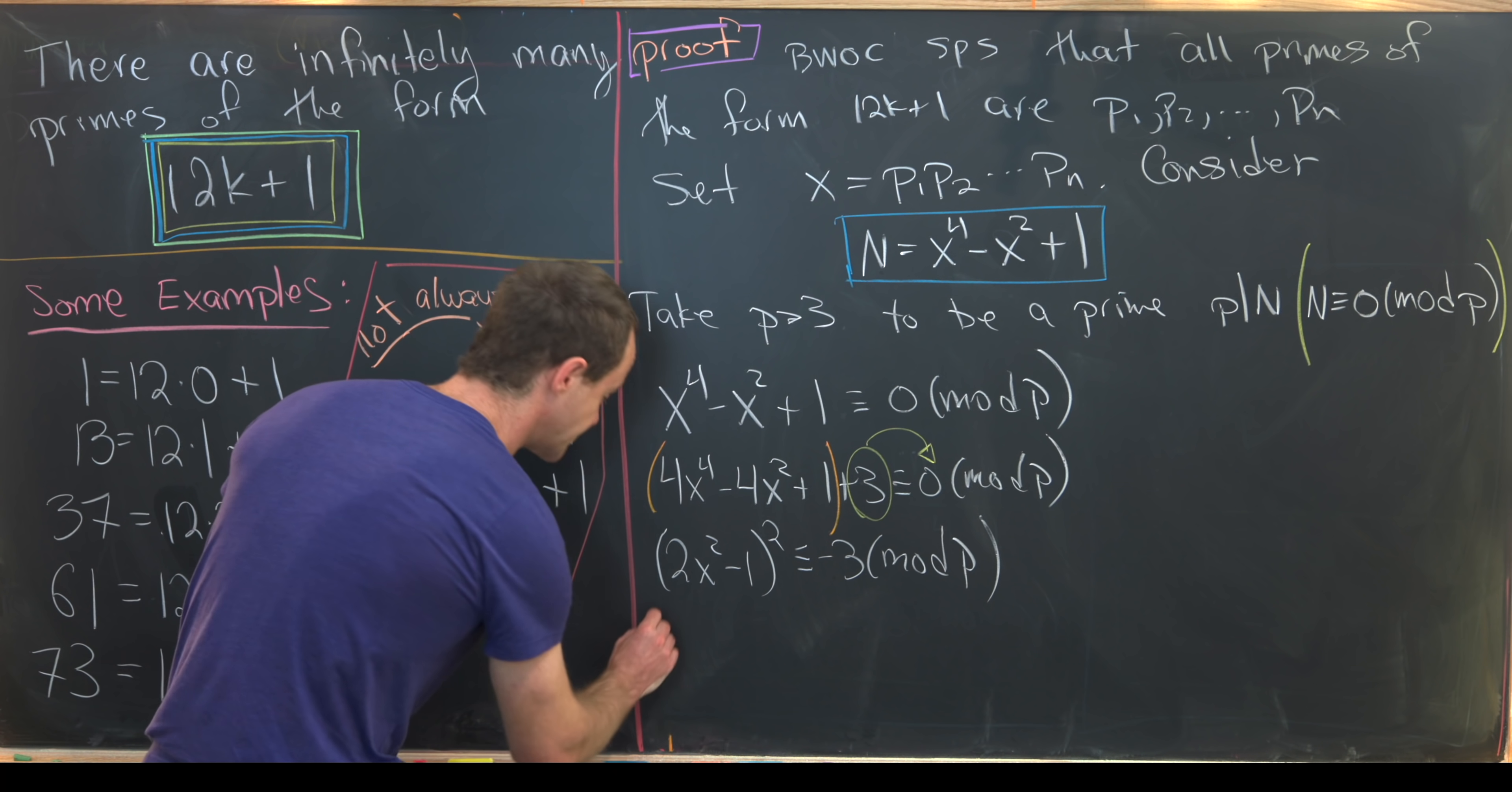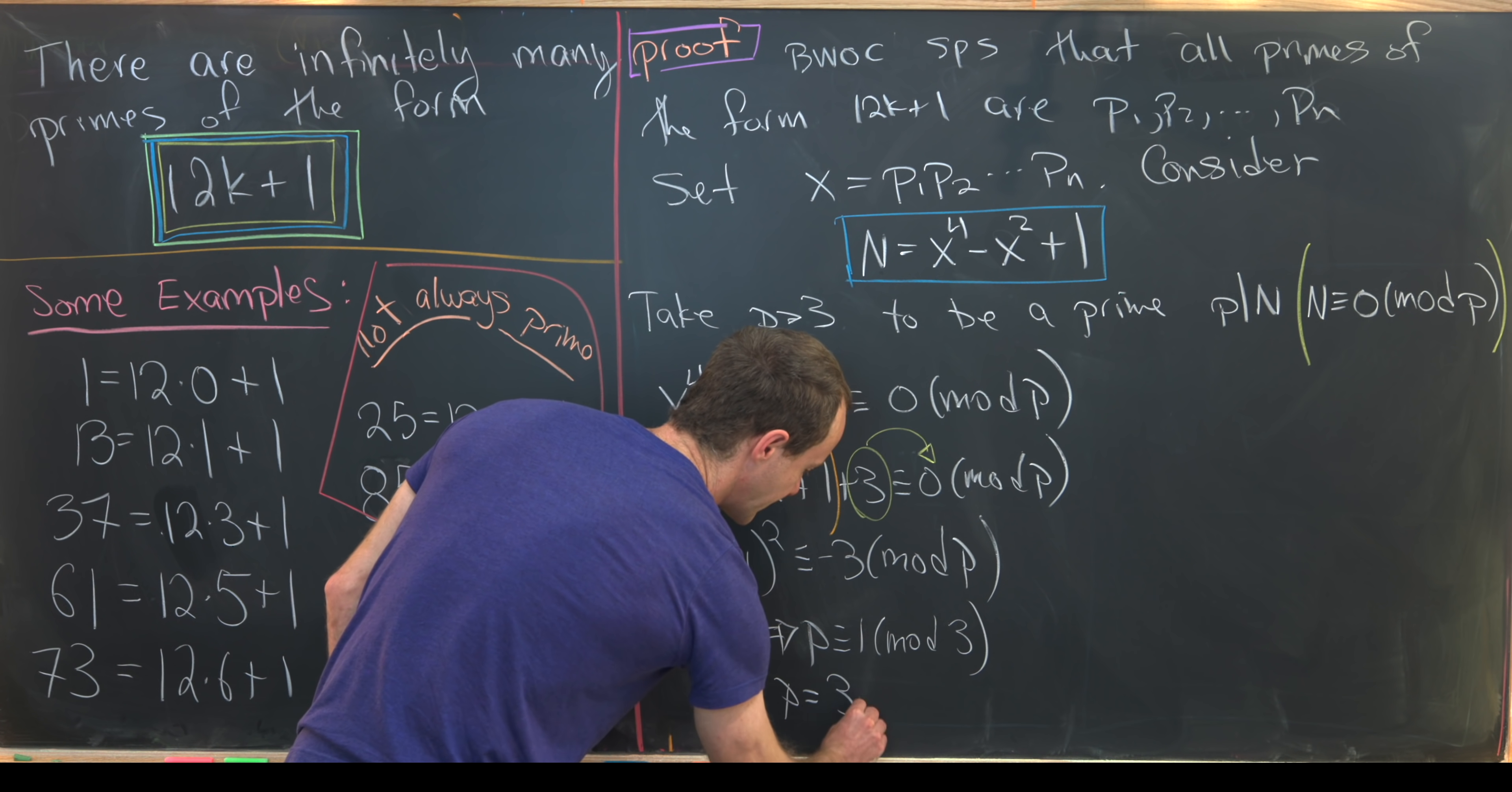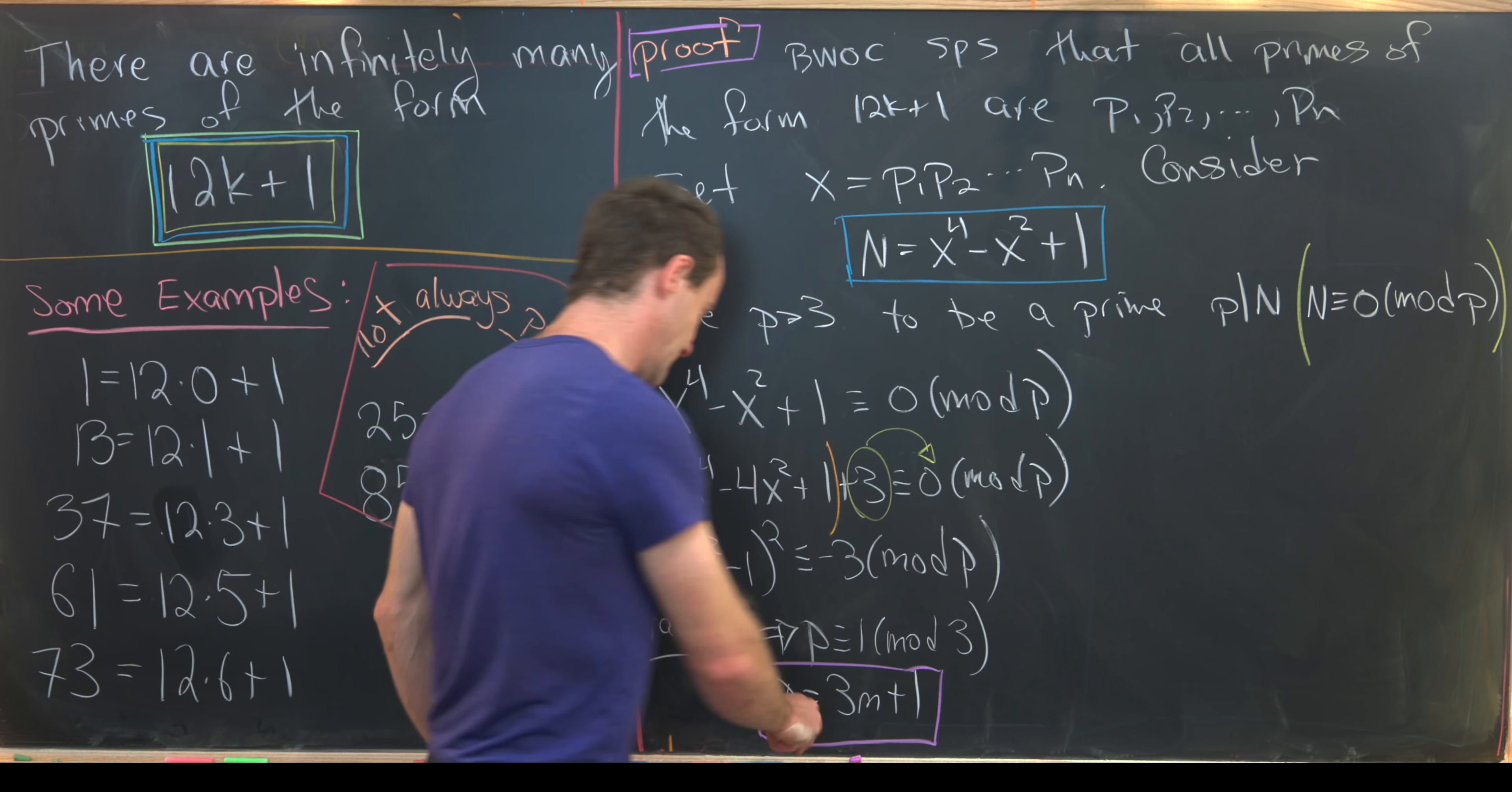But it doesn't really matter that we have 2x squared minus 1 over here. All that matters is that we have a perfect square on the left hand side. So we have a perfect square is congruent to negative 3 mod p. But then by our first fact, so I'll call it fact number 1, that tells us the form of p. So that means p is congruent to 1 modulo 3. In other words, p is equal to 3m plus 1 for some value of m. So that's an equivalent definition of being congruent to 1 mod p.